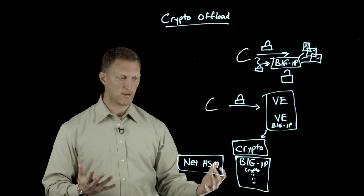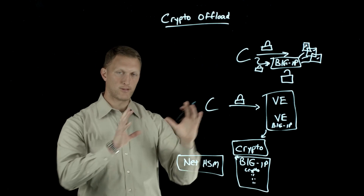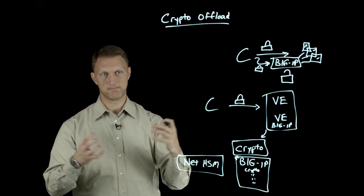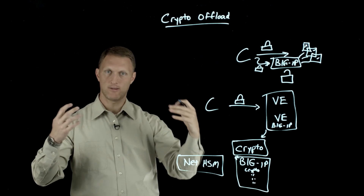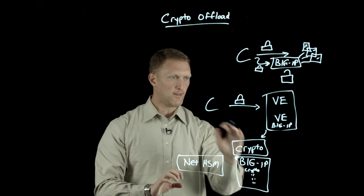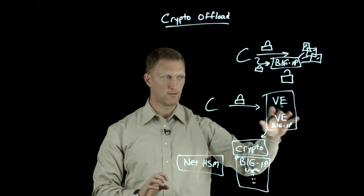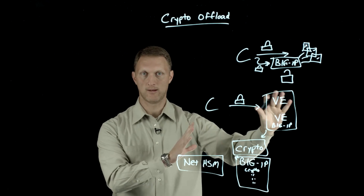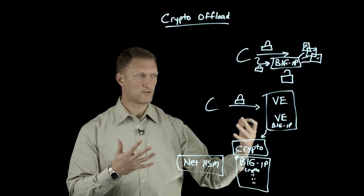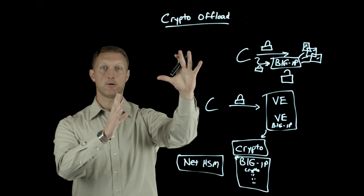This takes the burden of key management and all that really expensive crypto generation — symmetric key generation and key exchange — and moves it from your load balancers down to the specialized device. That takes the load off your load balancing devices so they can concentrate more on load balancing and the other things they're specialized to do, or because they may not have the hardware resources to do all this stuff efficiently. That's what crypto offload is all about.